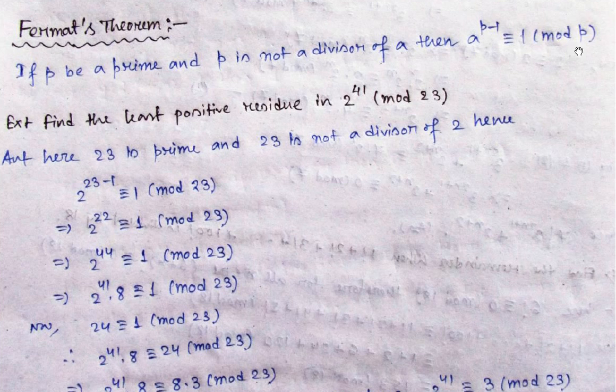To satisfy Fermat's theorem, you have to think about this under the modulo operator, where what we divide by will be a prime number.